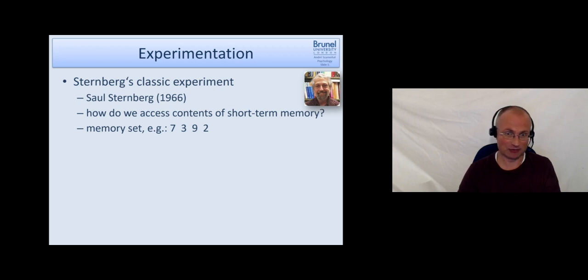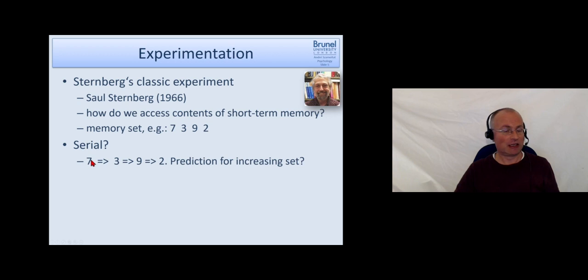This is called the memory set. In this example the phone number, let's use four digits here, let's say it's 7 3 9 2. The question Sternberg asked himself was, we could have two different strategies of how to determine whether a 5 or a 9 is in the set or not. We could do a serial search, that means we look first at the 7, is there the 5, no, then we look at the 3, then we look at the 9, and then we look at the 2. So we have to go through the set step by step in a serial fashion.